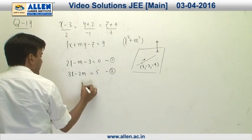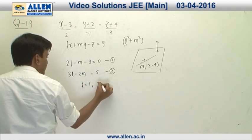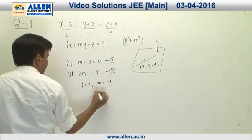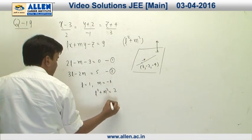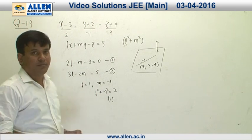By solving this, we can see this is going to be l equal to 1 and m equal to minus 1, and hence l square plus m square equals 2, which suggests the answer for this question will be 1.